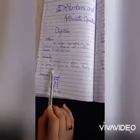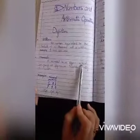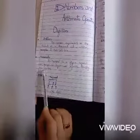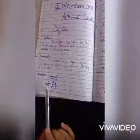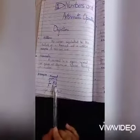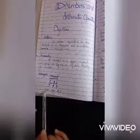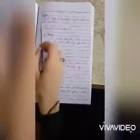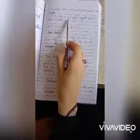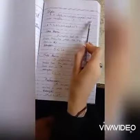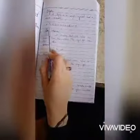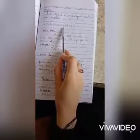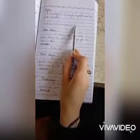Second, the definition of numeral: a numeral is a figure, symbol, or a group of figures or symbols denoting a number. Example: 153 is a numeral. In it, 1 is a digit, 5 is a digit, and 3 is a digit. The definition of a digit: a digit is a single symbol used to make a numeral — 0, 1, 2, 3, 4, 5, 6, 7, 8, and 9.